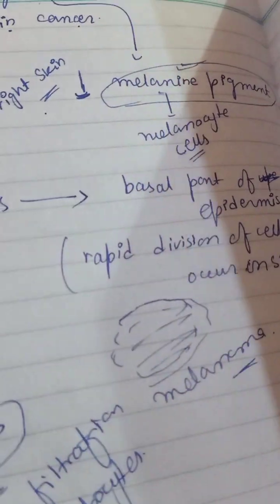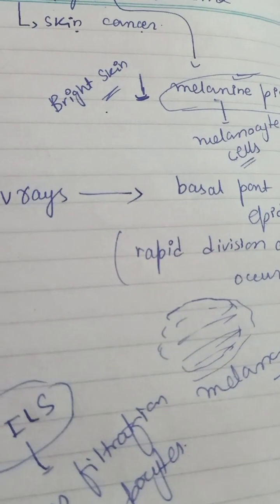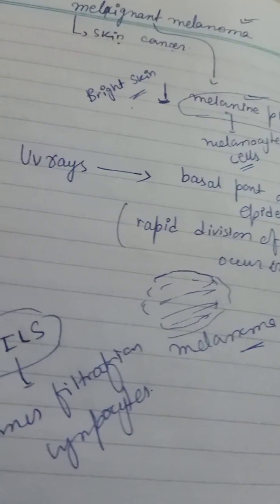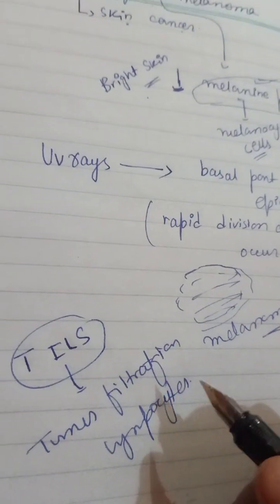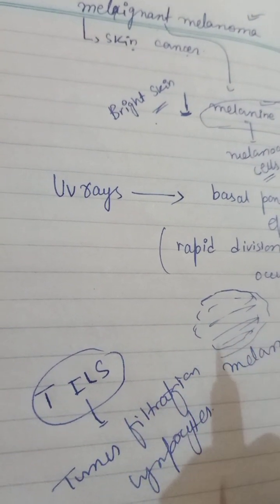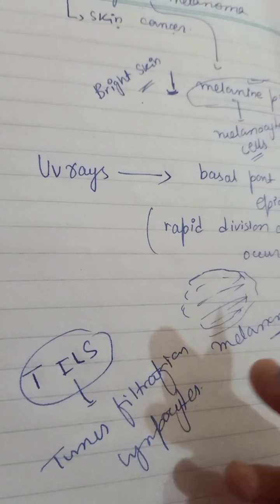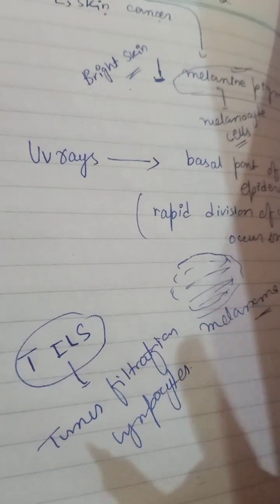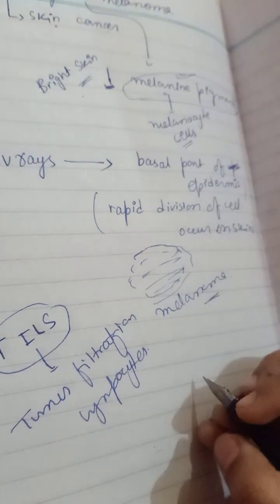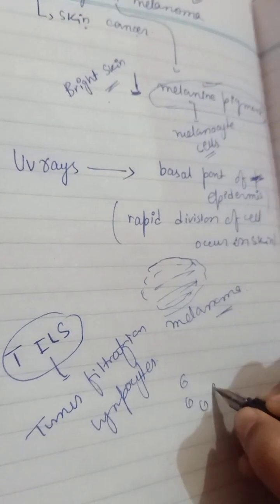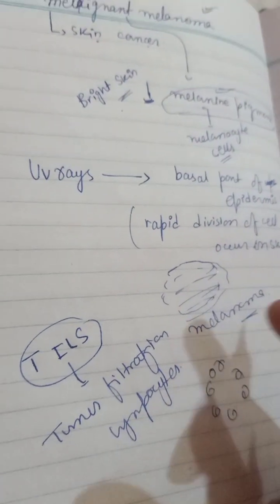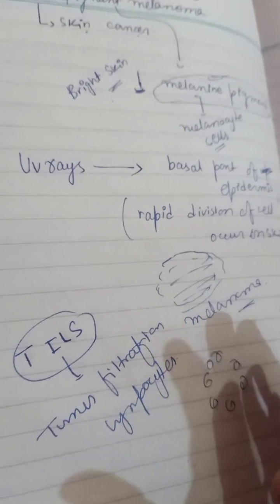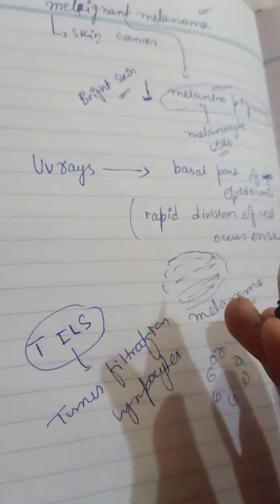These immune cells generate a response against the cancer cells. They basically engulf the cancer cell, or they produce toxins — chemicals which they produce to kill the cancer cell. They can also release perforin, which makes holes in the cancer cell wall, and then use enzymes to blast that cancer cell.